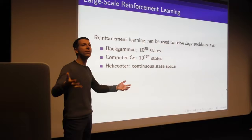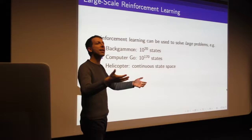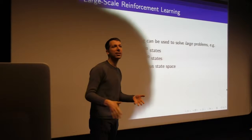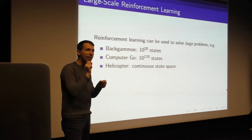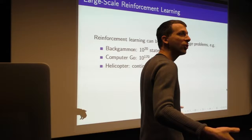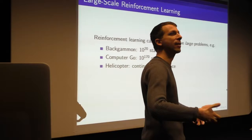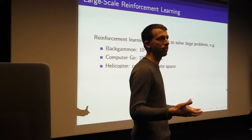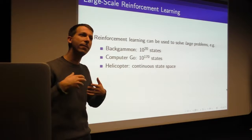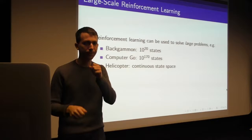We need methods that scale up regardless of the size of the state space — methods that work with infinitely large state spaces. You build a function approximator that estimates values for the parts of the space you visit, and generalizes across the space so you don't separately represent the value of being here versus one millimeter to the right. Nearby states should have similar values. The goal is to achieve that generalization and build efficient methods for representing and learning value functions.